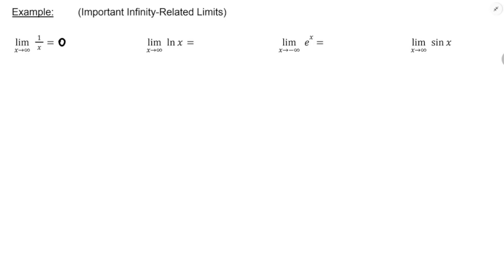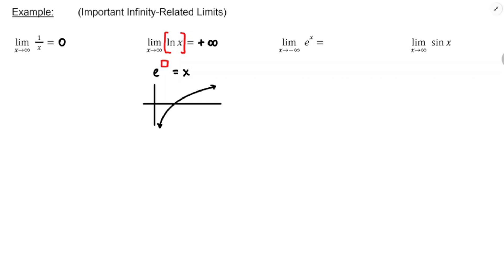The limit of natural log x as x approaches infinity is positive infinity. Think about what natural log of x is — it's the special exponent you put on e to get x. If you're taking the limit as x approaches infinity, there's no way to put e to one special power and get an arbitrarily large number — you'd have to take a really large exponent. Or think about the graph of y equals log x: it does not have a horizontal asymptote, it just continues to grow, so the limit is positive infinity.